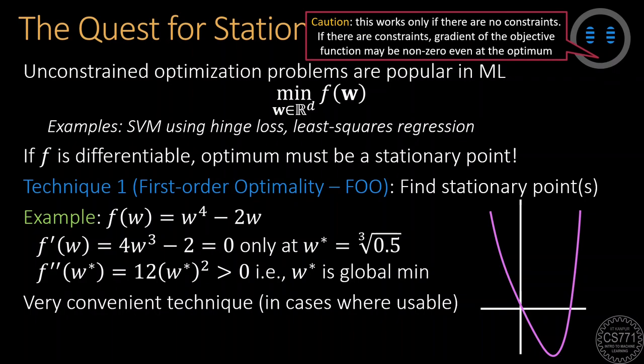However, it works only on unconstrained optimization problems. This is because for constrained optimization problems, the objective gradient may not vanish even at the optimum.